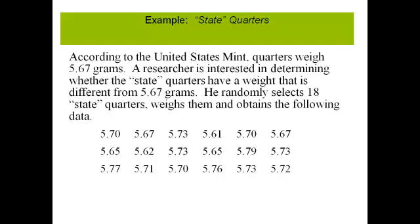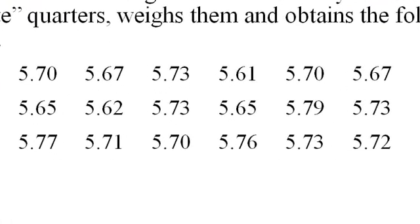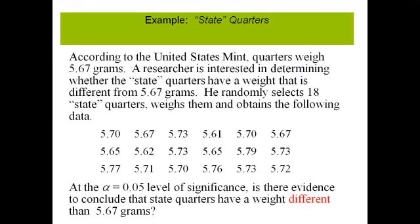We want to test at the alpha equals 0.05 level of significance: is there evidence to conclude that state quarters have a weight that is different than 5.67 grams? Now notice the keyword different.